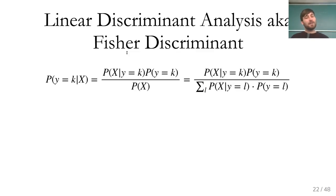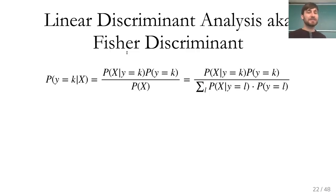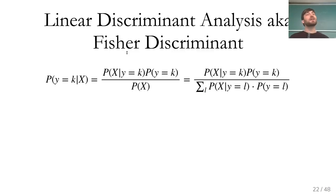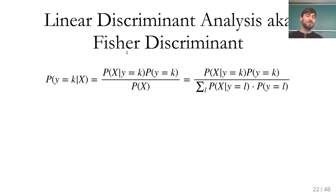I'm going to talk about linear discriminant analysis, also called Fisher's discriminant, and quadratic discriminant analysis. Both are instances of Bayesian classifiers where you have a probabilistic model of your data — generally these are generative models. The idea is we model the probability that the label is class K given the data, using Bayes' rule.